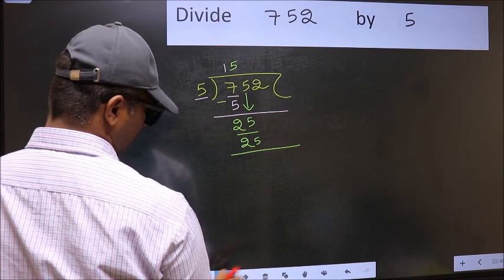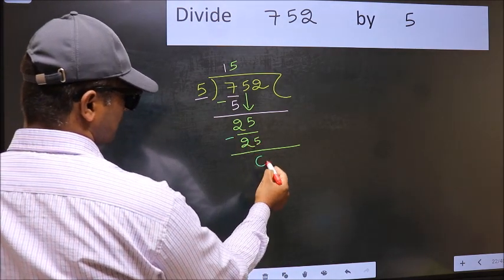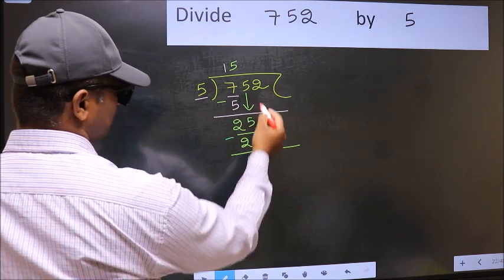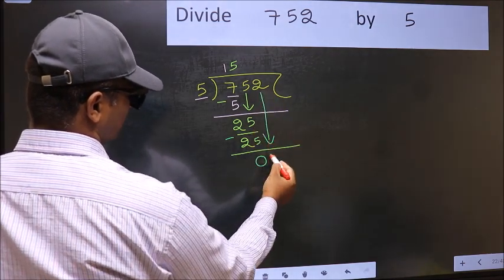Now you should subtract. 25 minus 25, 0. After this, bring down the beside number. So 2 down.